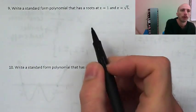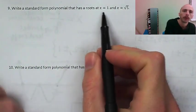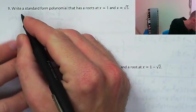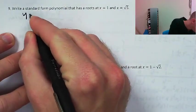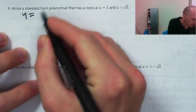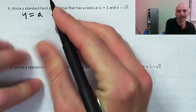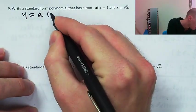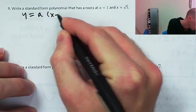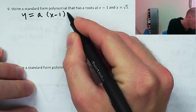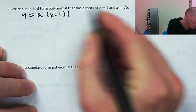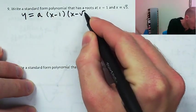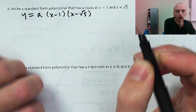So if x equals 1 is a root, then x minus 1 will be a factor of the polynomial. It would be like y equals some leading coefficient times x minus 1. And if x equals square root of 5 is a root, then x minus the square root of 5 is a factor.